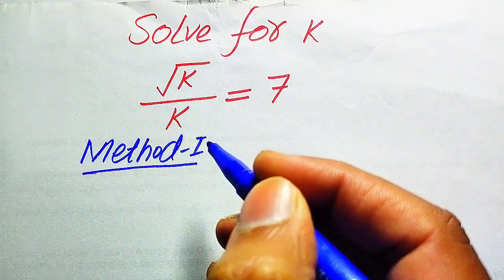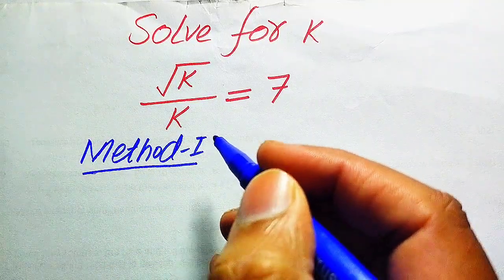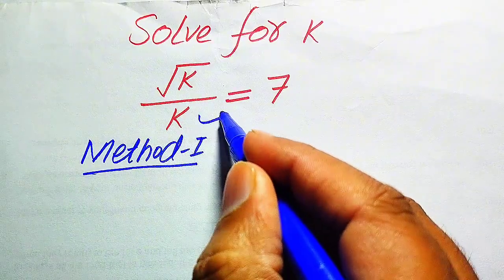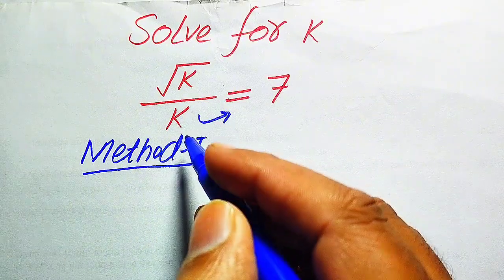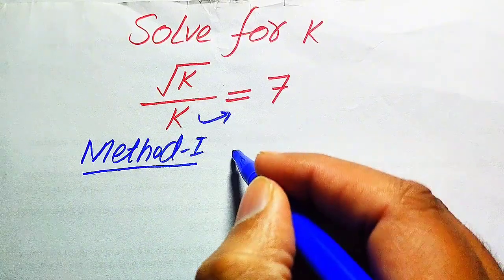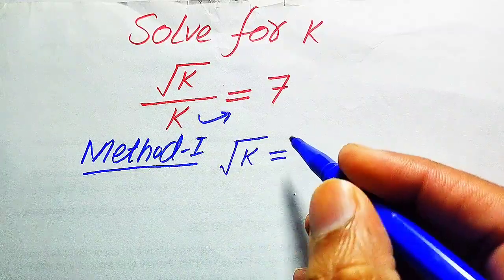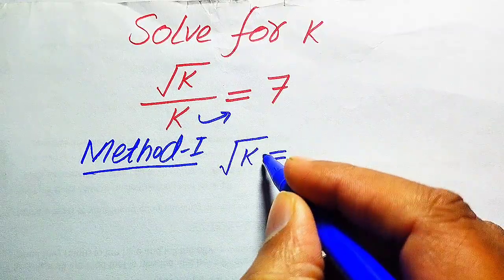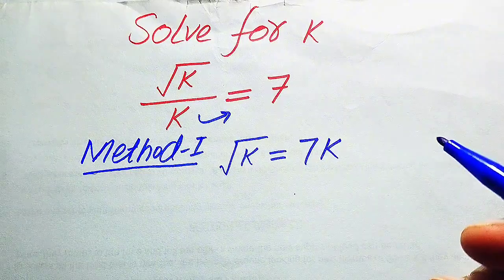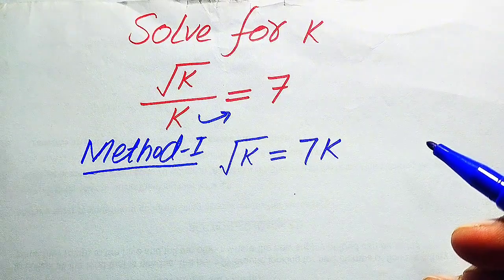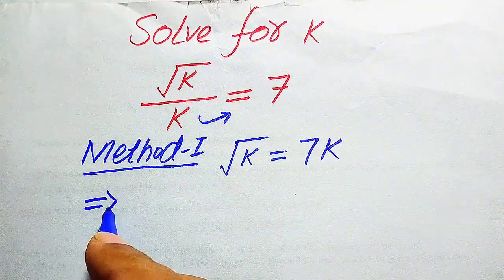In the first method, we move k to the right-hand side. It is divided on the left-hand side, so when we move it to the right-hand side it is multiplied by 7. This gives us: square root of k equals 7 times k.